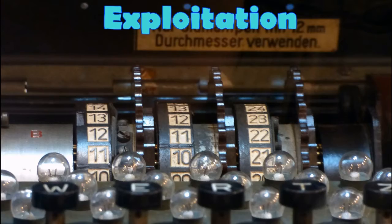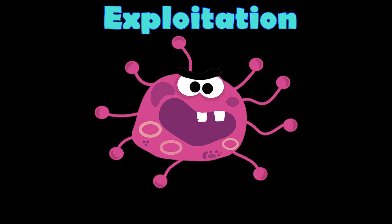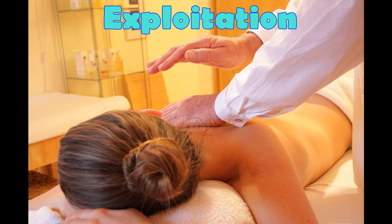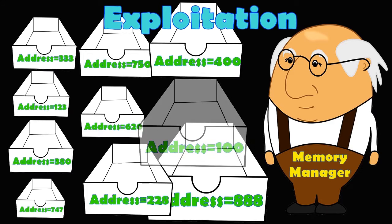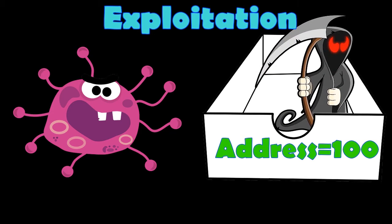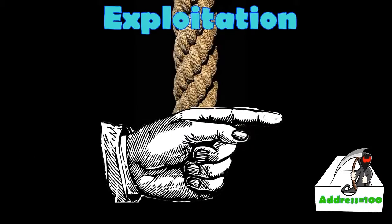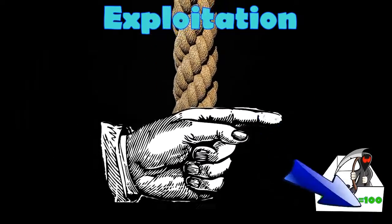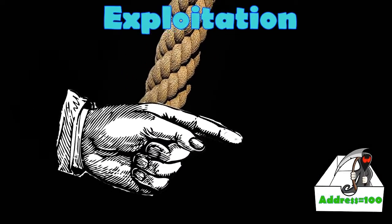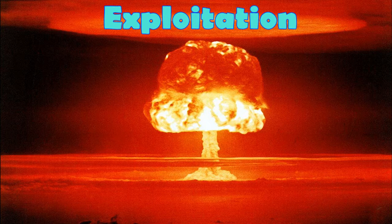Oh la la. Therefore, exploitation occurs by finding code that allows the exploit to create a dangling pointer situation, and massages the system into gaining access to the free memory block, and then fills it with its own data. When the system tries to accidentally reuse a dangling pointer with something like a function pointer, it will hit the exploit data, and the exploit gains control of the program.